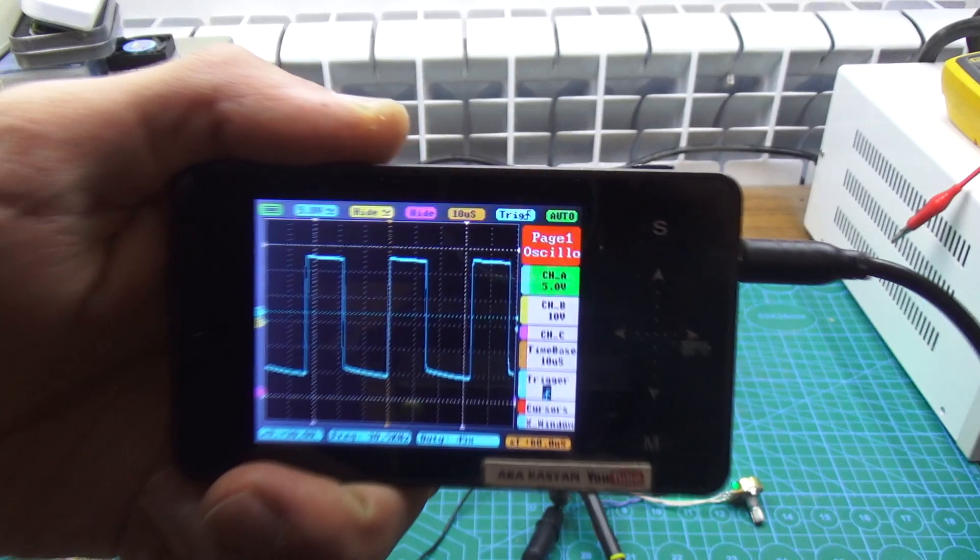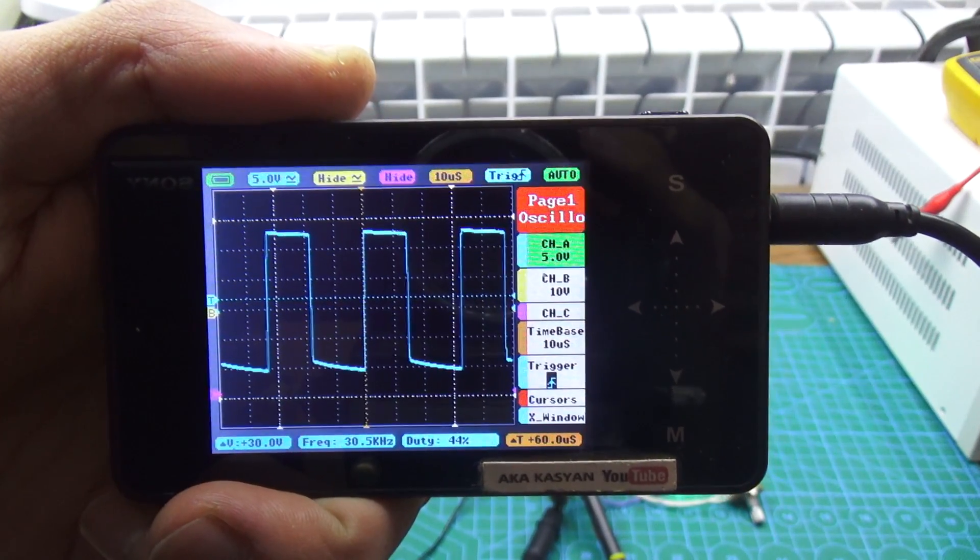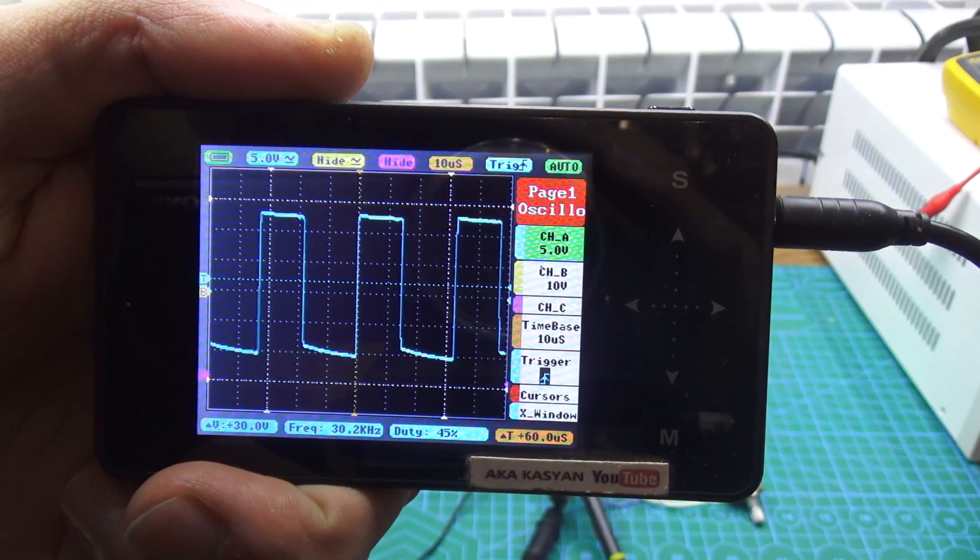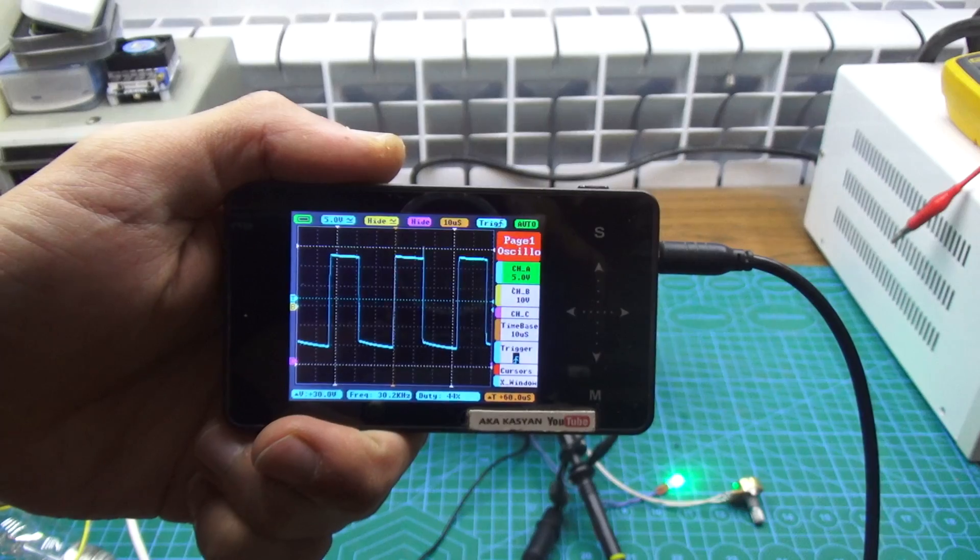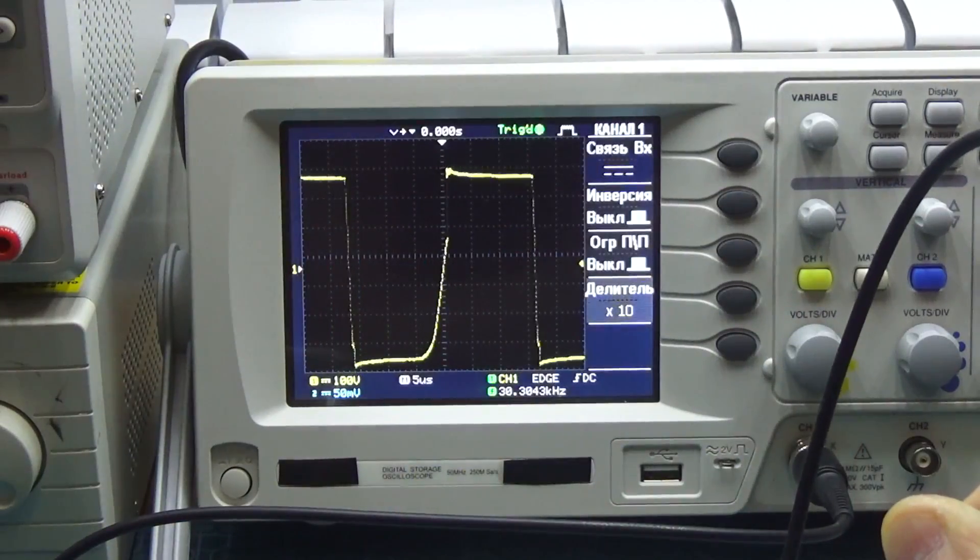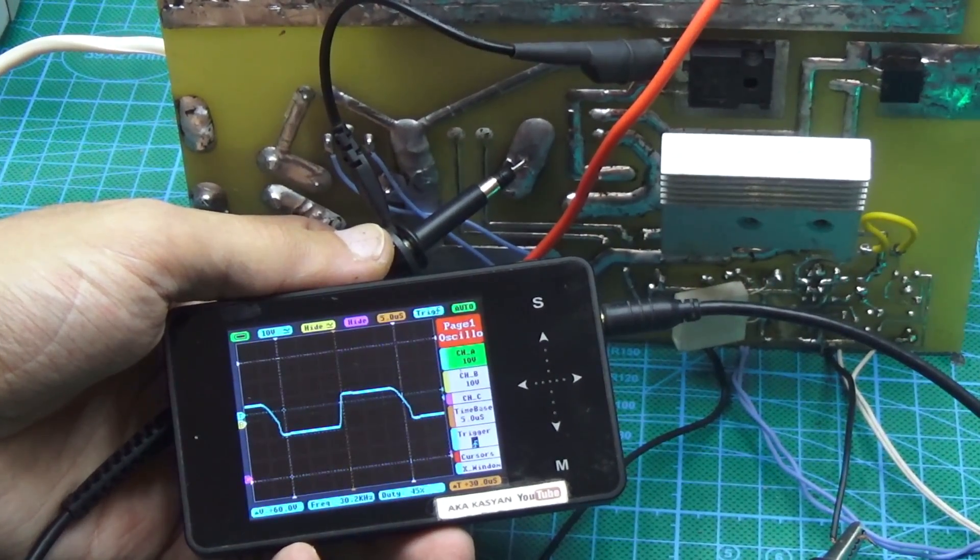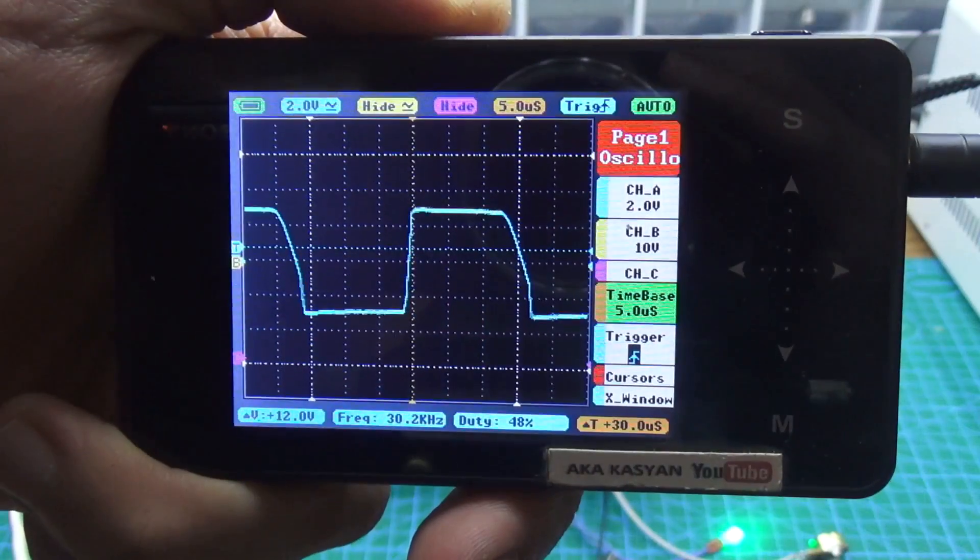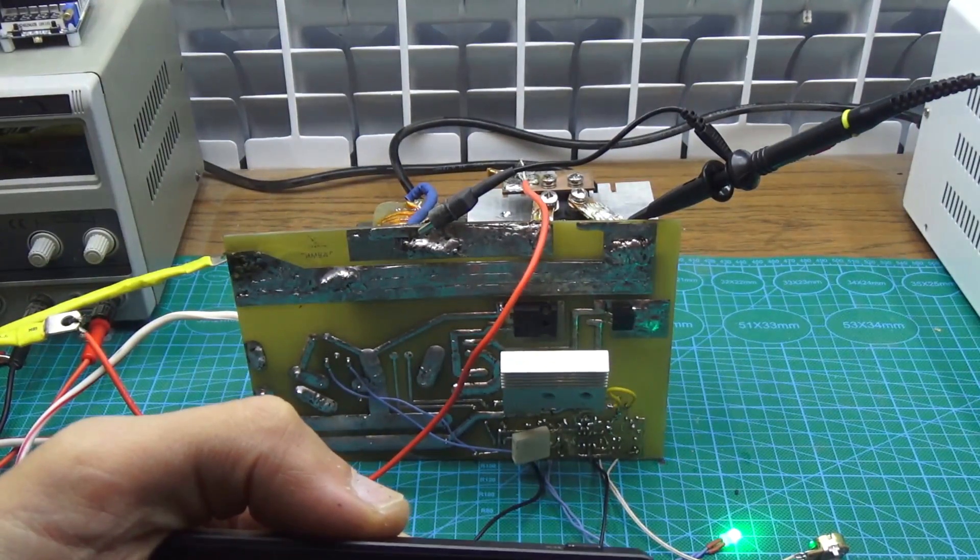The waveform of the signal on the gate of the power transistor, the inverter is connected to mains, the output isn't loaded, power is supplied to the control circuit from an external source. The waveform of the signal on the fixed winding, the conditions are the same. The waveform of the signal on mains winding, the conditions are the same. The waveform of the signal on the secondary winding, the conditions are the same.